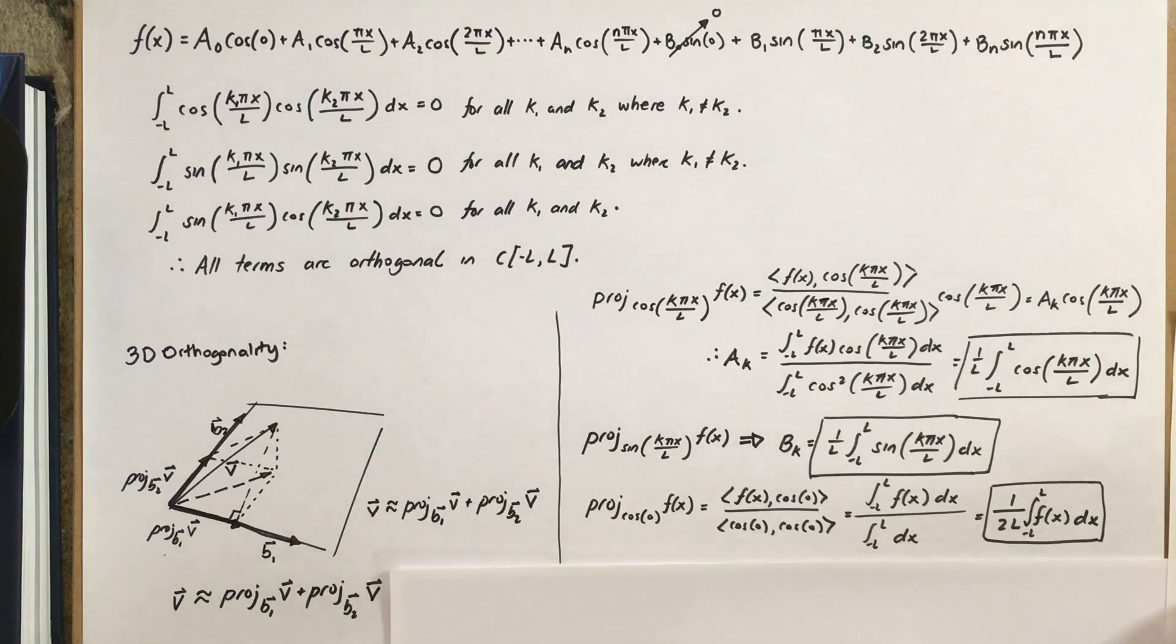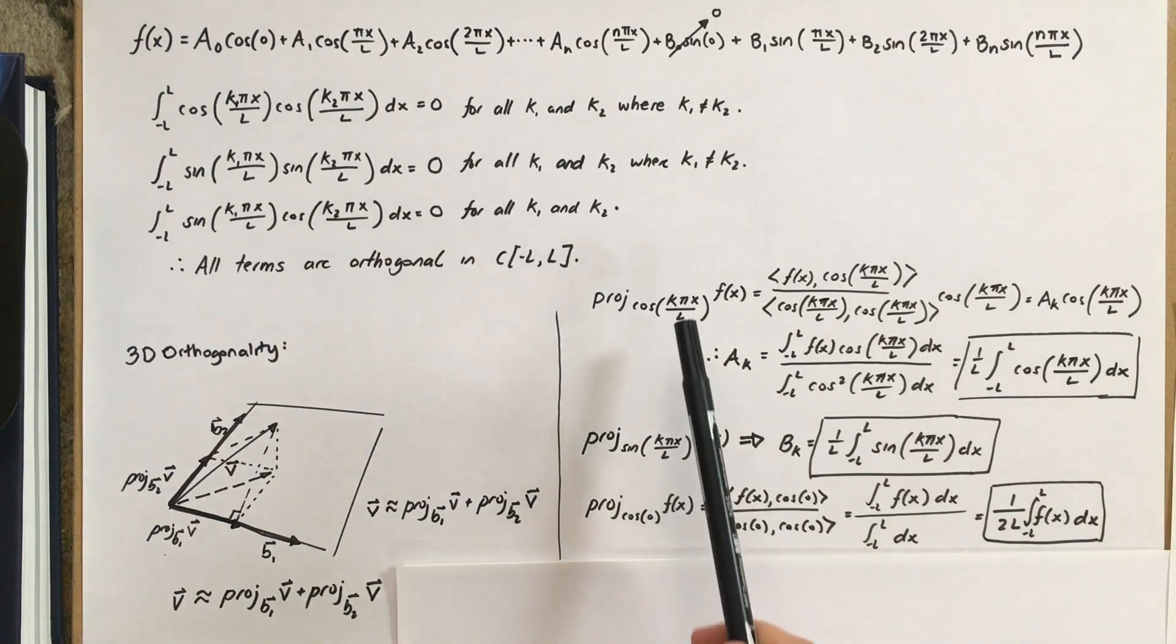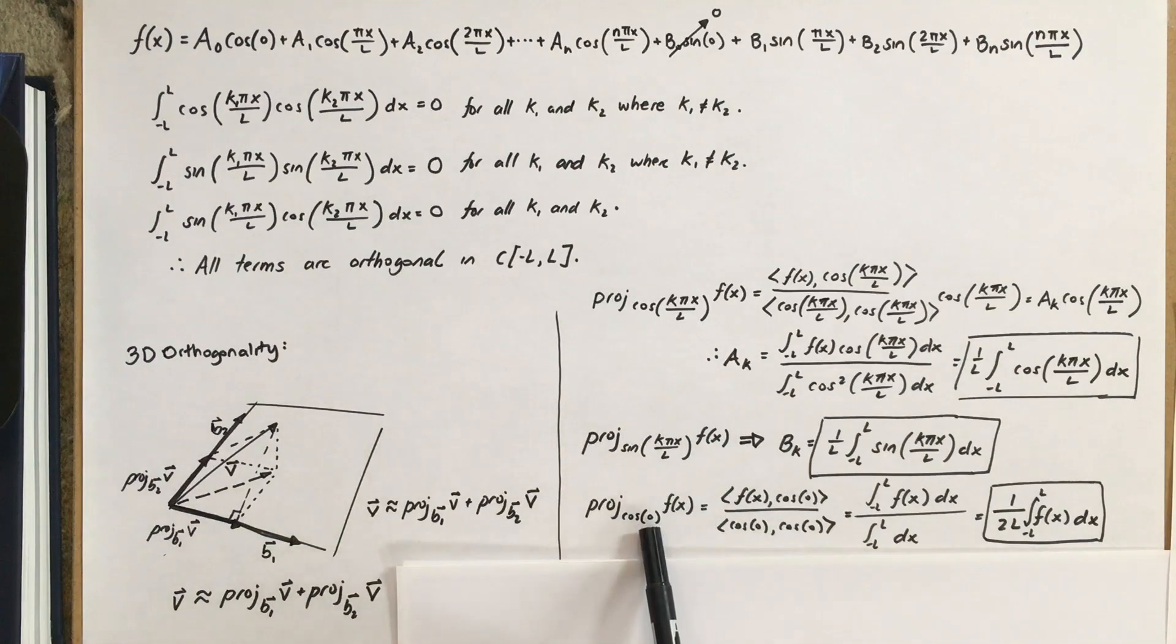And again, as I said, the a sub 0 term, it's different. So, if you use cosine of 0, so if your k were 0, your projection here is like f of x with cosine of 0 over cosine of 0 dotted with cosine of 0. And that gives you 1 over 2L instead of 1 over L. Just the way this math works out, since all of these are 1.